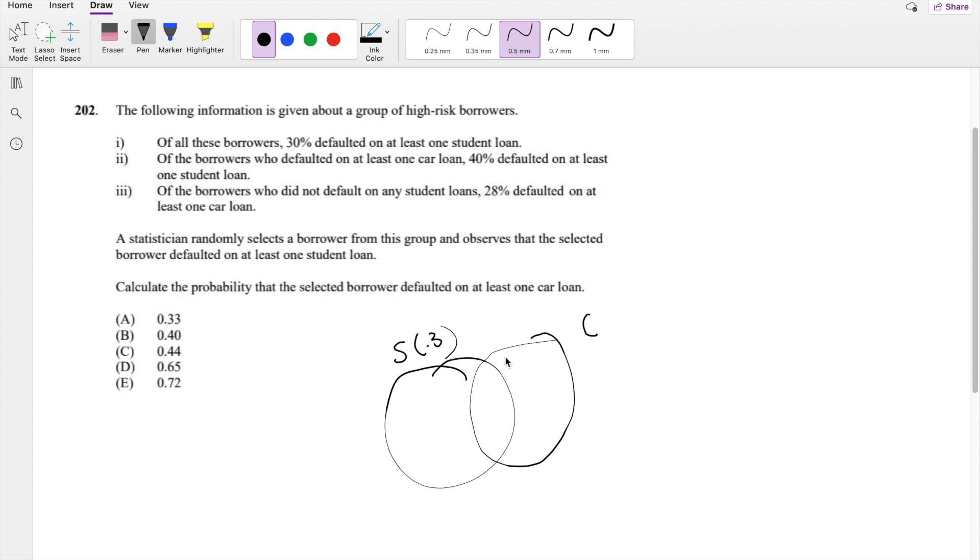So that means not student loans, like outside. So 0.70 times 0.28. This is the amount that is not student loans, but car loans. So that's equal to 0.196.